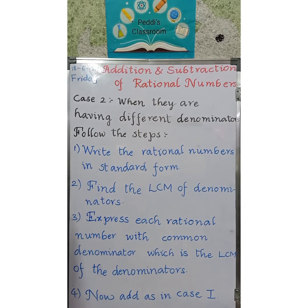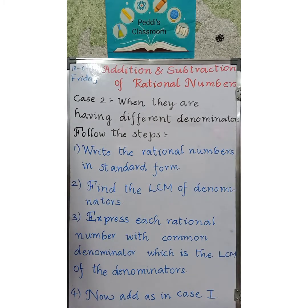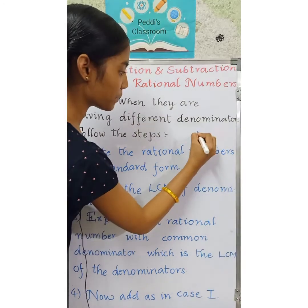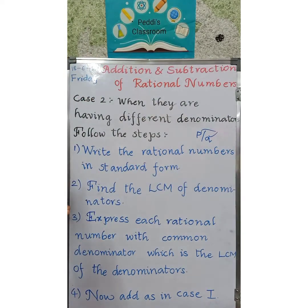Now let us discuss Case 2, when they are having different denominators. When they have same denominators it is very easy — we just add the numerators and write the common denominator. But when they are having different denominators we need to follow some steps. There are 4 steps. Step 1: write the rational numbers in standard form, meaning P and Q should not have any common divisor other than 1 — they should be co-prime numbers. Step 2: find the LCM of the denominators.